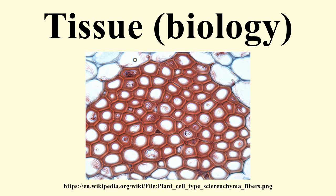Other cellular features, such as cilia, may also be described in the classification system. Some common kinds of epithelium include: simple squamous epithelium, stratified squamous epithelium, simple cuboidal epithelium, transitional epithelium, pseudostratified columnar epithelium, columnar epithelium, glandular epithelium, ciliated columnar epithelium, and mineralized tissue.